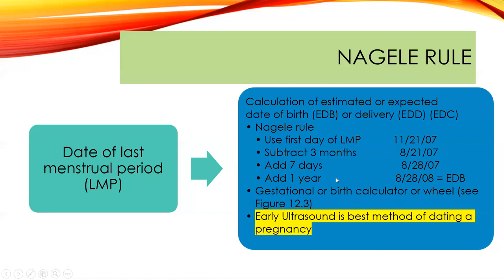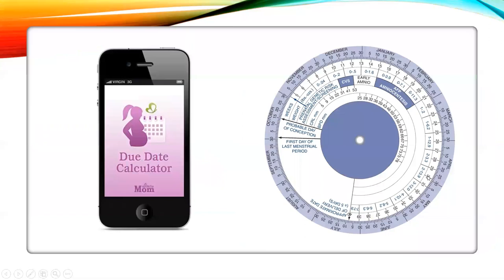Due date calculators on your phone or a gestational wheel work similarly — you put the arrow on the first day of the last menstrual period and find the approximate date of delivery at the 40th week. You can also determine how many weeks along someone is, which is useful in the ER. In medicine, we track pregnancy in weeks rather than months.